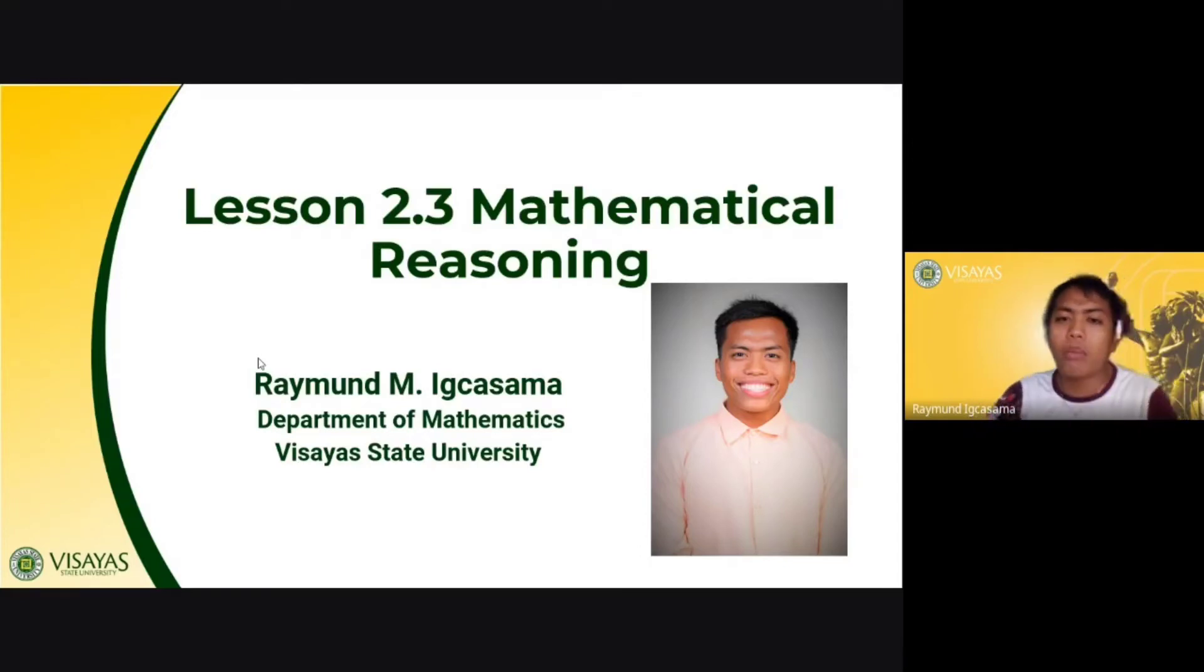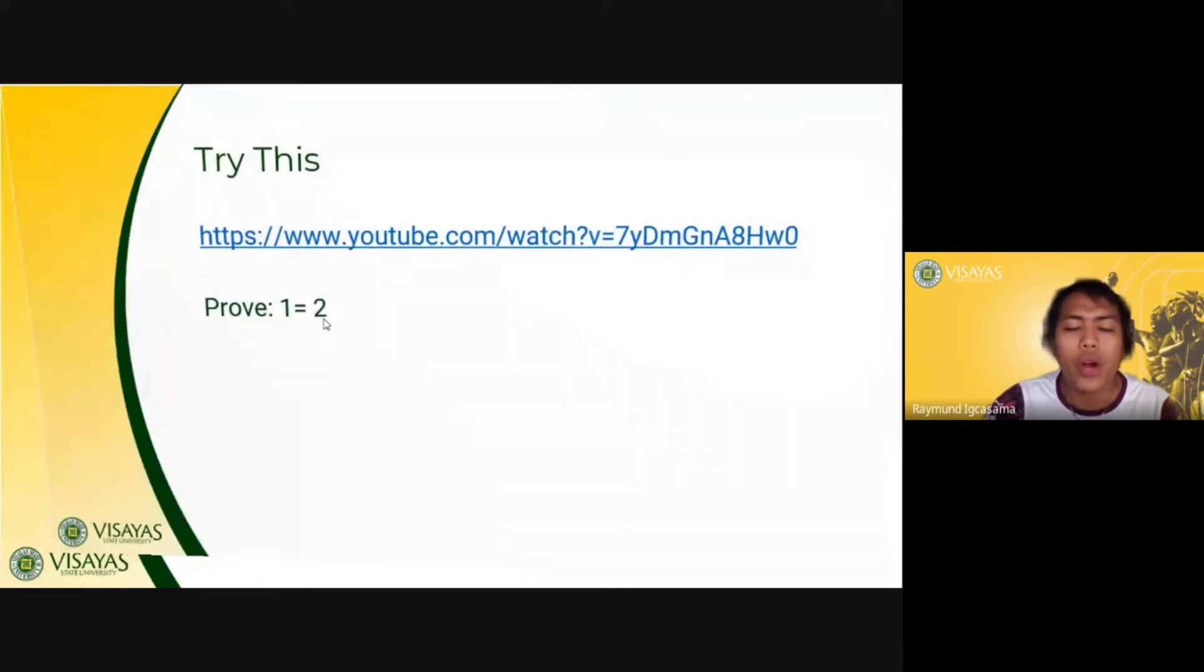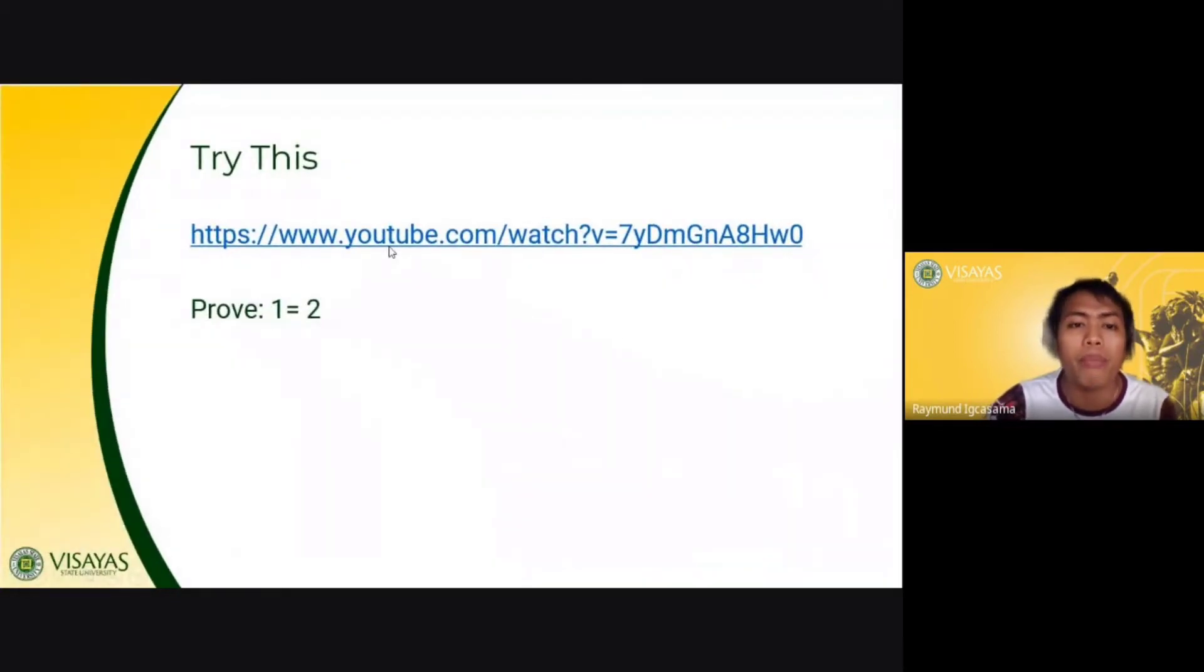Lesson 2.3 talks about mathematical reasoning. In mathematics, it is very important for you to be able to understand, especially on how to create proof. And of course, your proof must be valid. You should be able to identify which statement or argument is valid or invalid. That's what we are going to discuss this afternoon. Before proceeding, I want you to watch this video and we will try to solve the logic here.